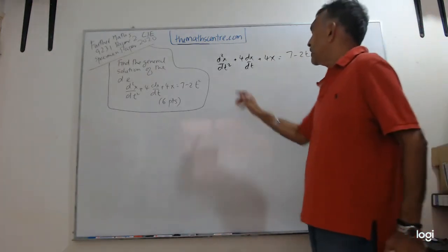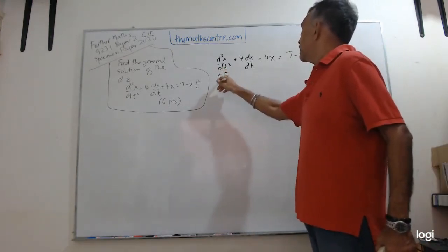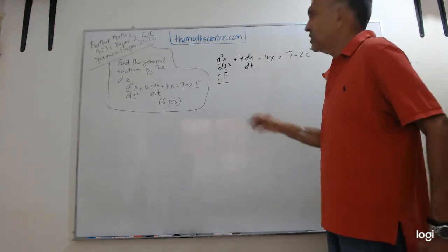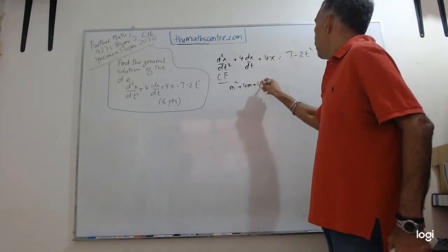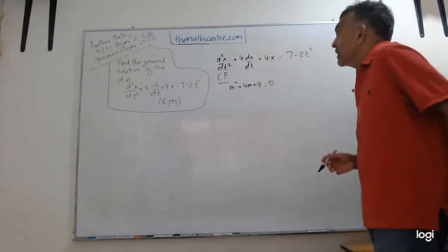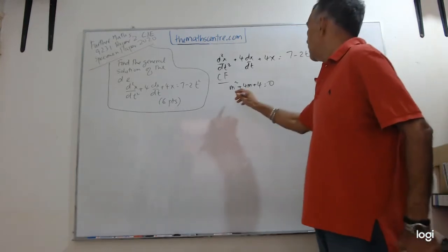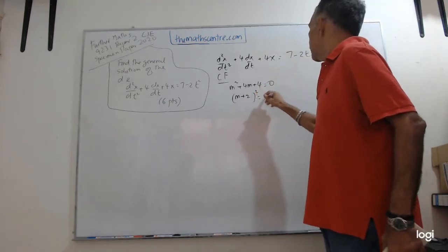First off, we have to determine the complementary function. For that, let's use that famous M equation. So we have M² + 4M + 4 = 0. Some books call this the characteristic equation, and this one we know is (M + 2)² = 0.